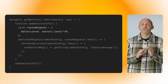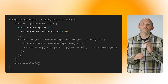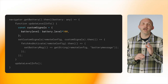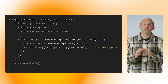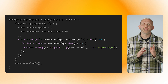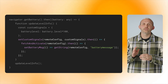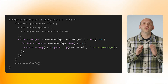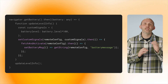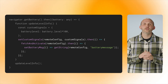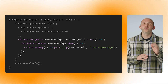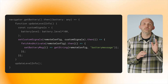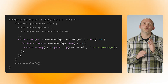Once I have that, I create a JSON object called Custom Signals, passing in the battery level as the argument. Once that is created, I call Set Custom Signals to pass the custom signals back to the Firebase backend. And once complete, I fetch and activate the setting from Remote Config. This will then return a message from the Remote Config backend that corresponds to the current battery level.